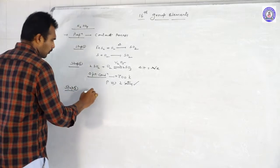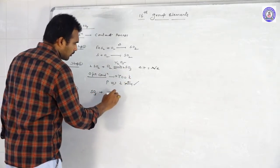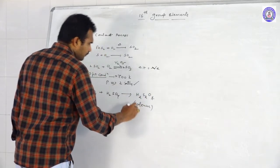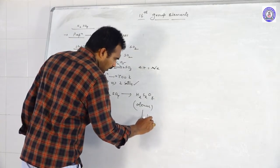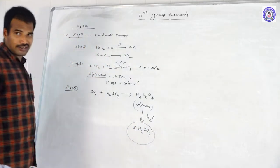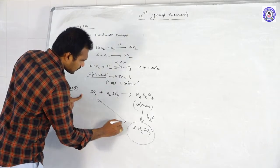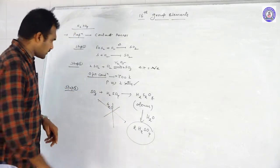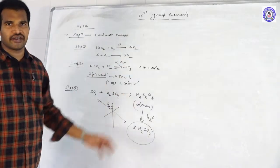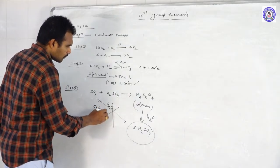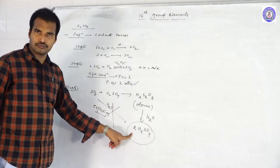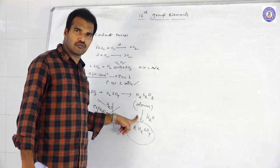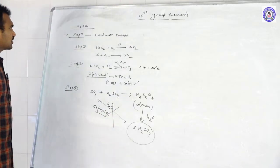Step 3 of the Contact Process: the formed SO3 is dissolved in concentrated H2SO4 to give H2S2O7 (Oleum). Then Oleum is further hydrolyzed with water to give two moles of H2SO4. We do not dissolve SO3 directly in water because this suddenly liberates a huge amount of energy and may cause an explosion. Therefore, SO3 is first dissolved in H2SO4 to make Oleum, and then Oleum is dissolved in water to safely get H2SO4.